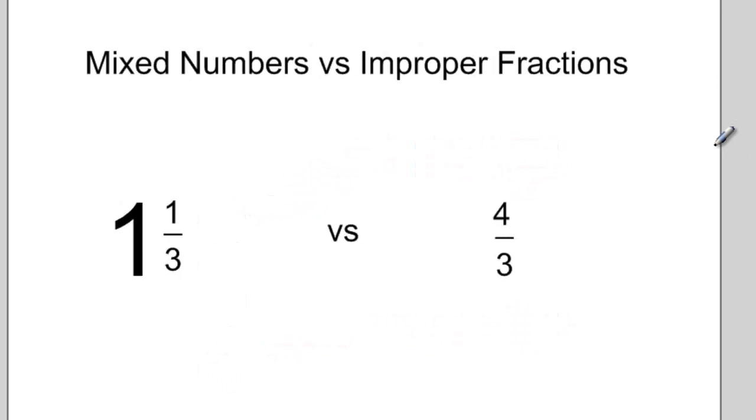In some of the math classes that you've taken in elementary school, you've probably been introduced to mixed numbers and improper fractions. A mixed number looks something like this: one whole and one third. An improper fraction would look like this: 4 over 3, or 4 thirds.